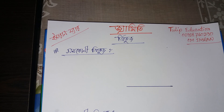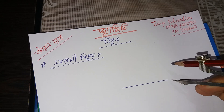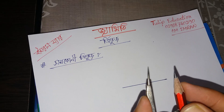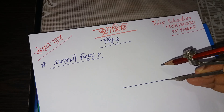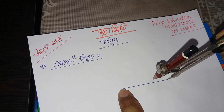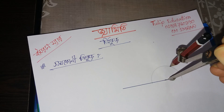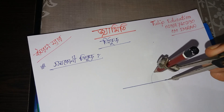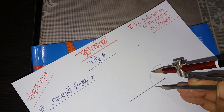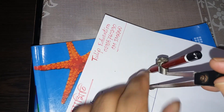Using pencil and compass, we can draw any angle. We will learn this now. From this arc, draw another arc.